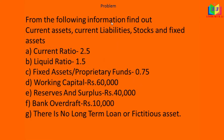From the following information, find out current asset, current liabilities, stock and fixed assets. The given data: current ratio is 2.5, liquid ratio 1.5, fixed asset by proprietary fund 0.75, working capital 60,000, reserves and surplus 40,000, bank overdraft 10,000.